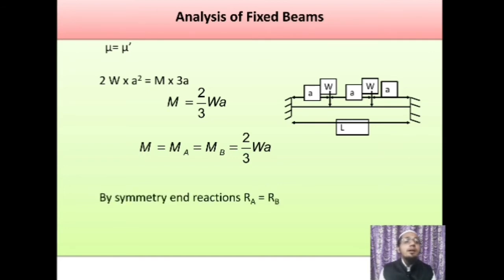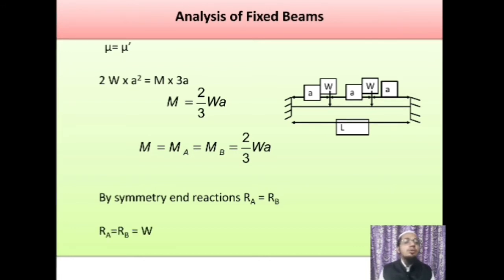Now what about the reactions? We have found the two unknowns MA and MB. For the support reactions, due to symmetrical loading, RA equals RB. Total downward load is W plus W, that is 2W. So half is taken by support A and half by support B, giving RA equals RB equals 2W divided by 2, that is equal to W. Now with support moments and support reactions known, we can proceed to construct the shear force and bending moment diagrams.